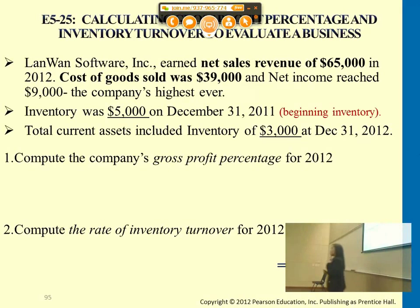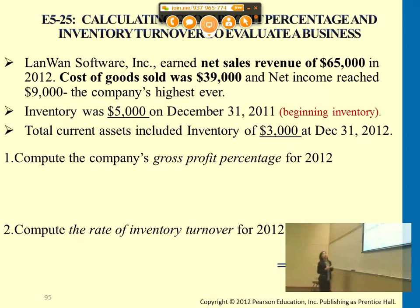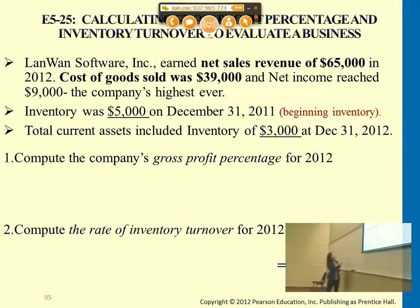The first ratio here — how do we get gross profit? Net sales minus cost of goods sold. Net sales minus cost of goods sold, and how much did we get for gross profit? $26,000.